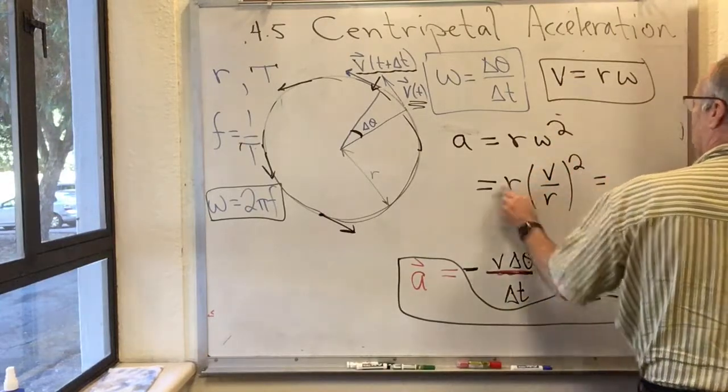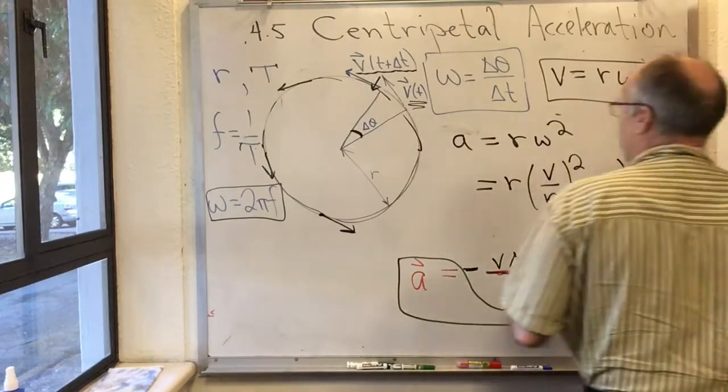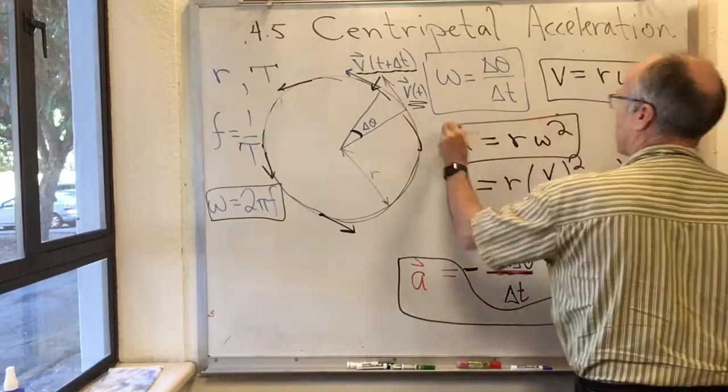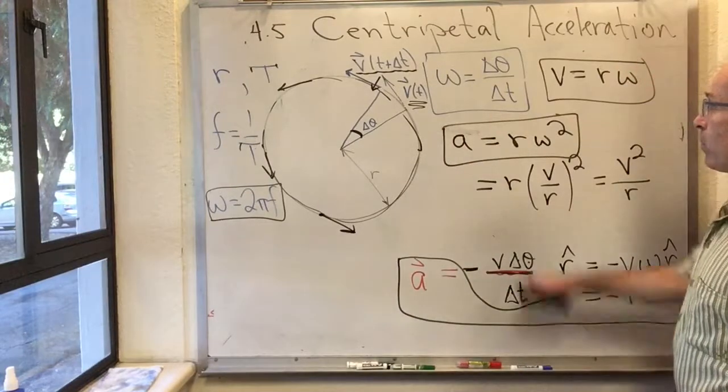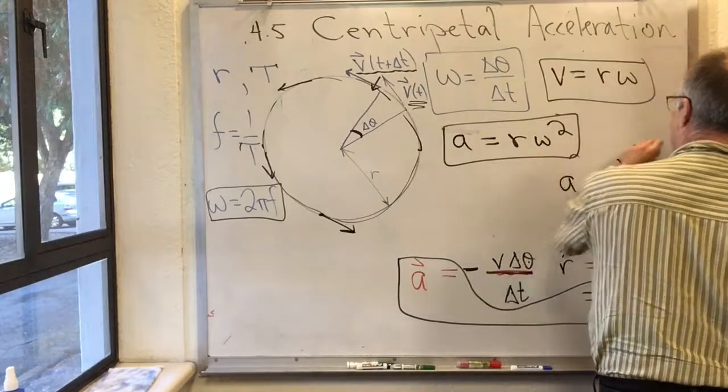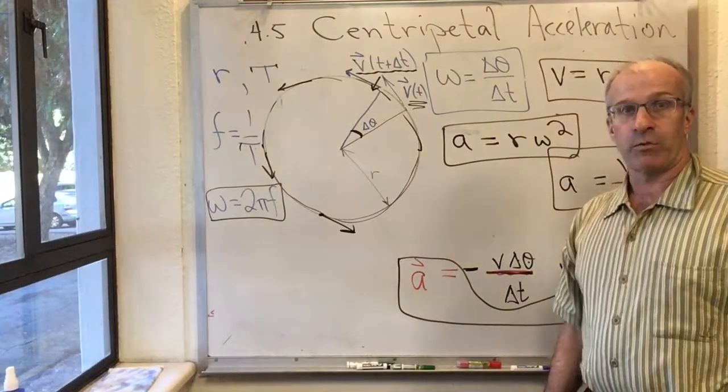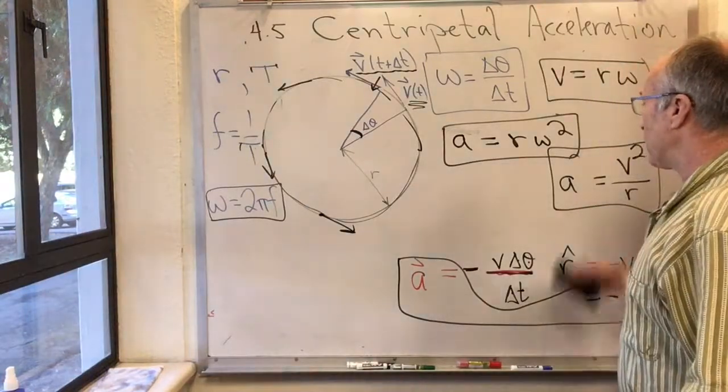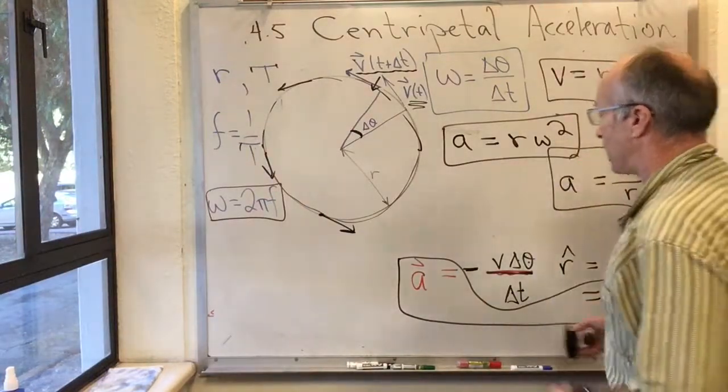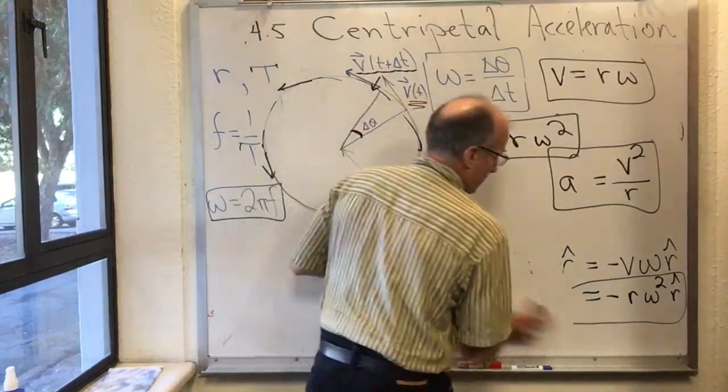And a really common way to do that is to rewrite this as r times omega is v over r. That's squared. So a really common way to write this is v squared over r. So you'll see that as a common expression for the magnitude of the centripetal acceleration. And you'll also see this as a common expression for the magnitude of the centripetal acceleration. And which one you use is dependent upon which one is more convenient in terms of the problems that you're given.